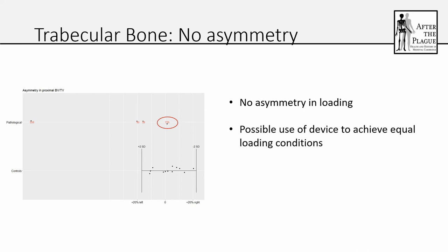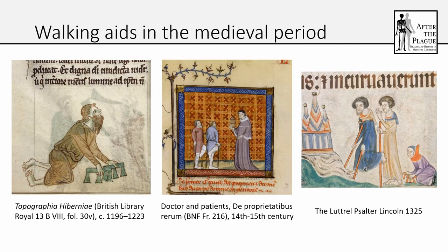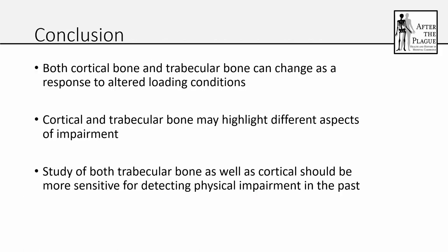I thought about this for a while, and if we accept that trabecular bone is reflective of the last couple of years of life before death, one possible interpretation is that this individual was using some kind of assistive device — like an elevated shoe, for example — to achieve equal loading of his legs. I went into the medieval literature and there are a number of depictions of walking aids in the medieval period. I haven't yet found any kind of platform shoe, but it is clearly common practice in the medieval period to have these kinds of walking aids. So it's perfectly possible that some kind of device was used, which would result in his legs being loaded evenly.